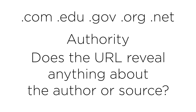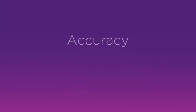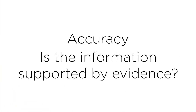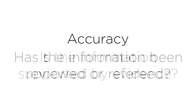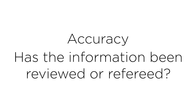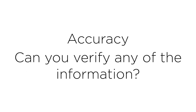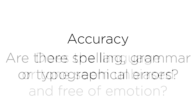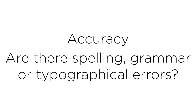Examples include .com, .edu, .gov, .org, .net. Accuracy: the reliability, truthfulness and correctness of the content. Where does the information come from? Is the information supported by evidence? Has the information been reviewed or refereed? Can you verify any of the information in another source or from personal knowledge? Does the language or tone seem unbiased and free of emotion? Are there spelling, grammar or typographical errors?